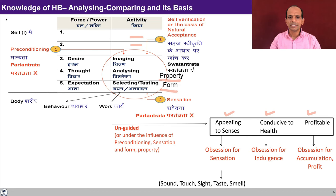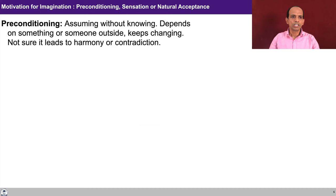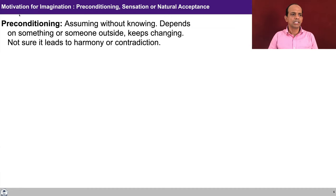You can verify yourself and see how much of your thought is obsessed by these three bases: appealing to senses, conducive to health, and whether it is profitable or not — in Hindi, Priya, Hit, and Labh. Now what is the motivation for imagination here? It could be either preconditioning, sensation, or natural acceptance. Preconditioning is assuming without knowing, depends on something or someone outside, keeps changing, and one is not sure whether it leads to harmony or contradiction.